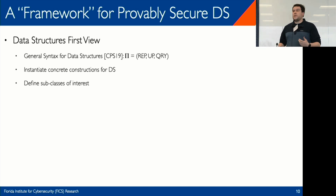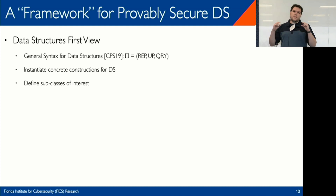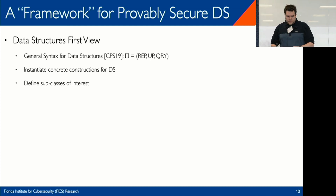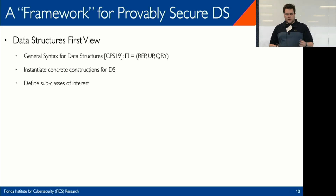The key demand is a data-structure-first view: we treat data structures as primitives in and of themselves and ascribe security properties specifically to the data structure, rather than to some abstract protocol using it. We select a general syntax to describe data structures — I'm partial to the one from Clayton et al., which describes data structures through three operations: representation to initialize, updates to process updates, and queries to process queries.